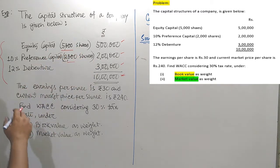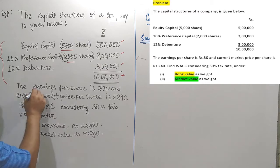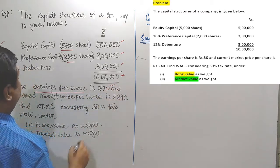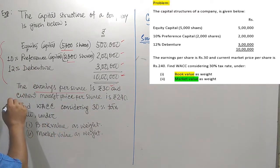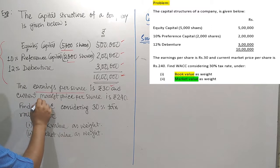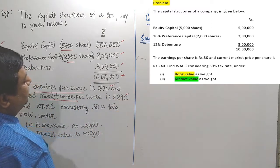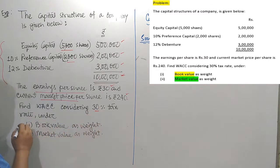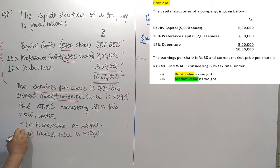The total capital is 10 lakhs. Earnings per share (EPS) is rupees 30 and the current market price per share is rupees 340. Find WACC considering a 30% tax rate under both book value and market value methods.